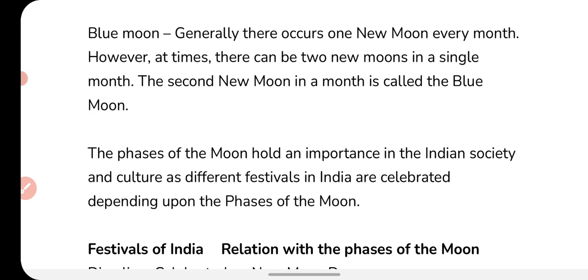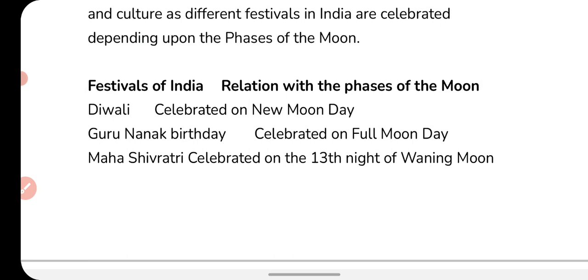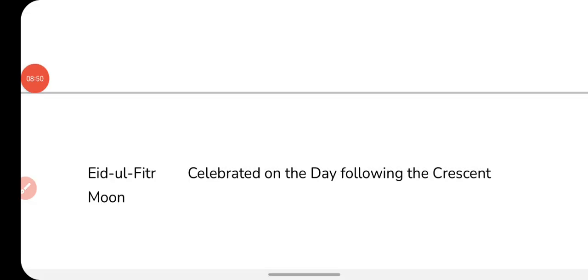The phases of the moon hold great importance in Indian society and culture, as different festivals in India are celebrated depending upon the phases of the moon. For example, Diwali is celebrated on new moon day, Guru Nanak's birthday is celebrated on full moon day, Shivratri is celebrated on the 13th night of the waning moon, and Eid-ul-Fitr is celebrated on the day following the crescent moon.